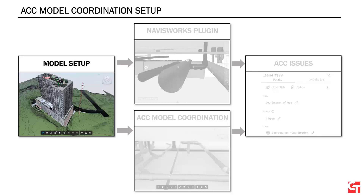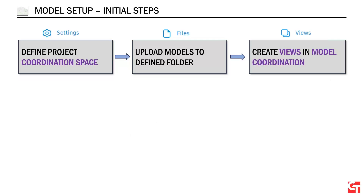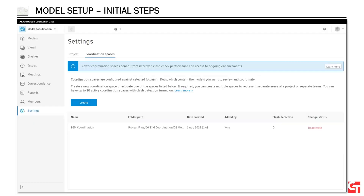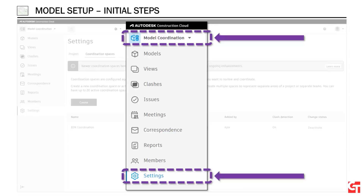To start with model setup — if any of you have used Glue or any other way to combine models, this is pretty similar. We're just pulling everything up to one spot so we can look at an entire model in one consolidated view. In ACC model coordination, the words highlighted in purple are specific terms to the model coordination tools. We'll start with defining our project coordination space, then upload models to that defined folder, and finally create views in model coordination. I'd like to point out that you'll note in this interface I'm actually in model coordination looking at settings, because I cannot access the coordination space settings within the overall project settings.